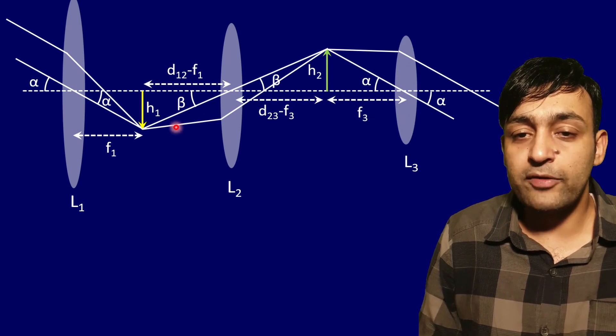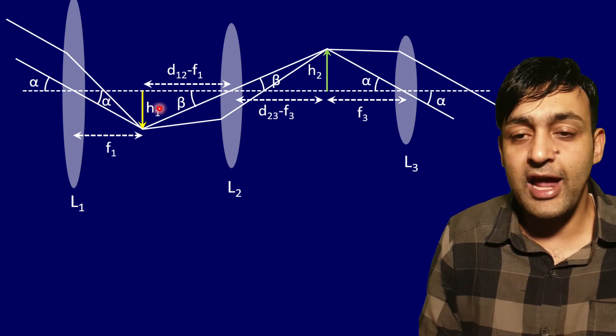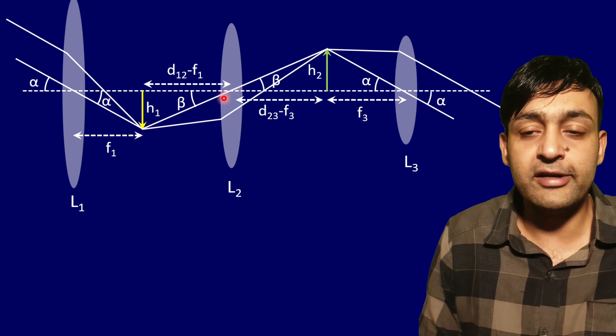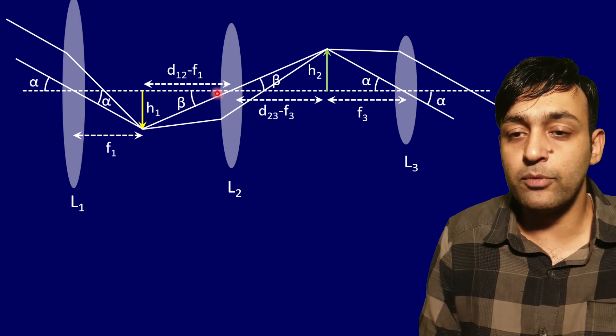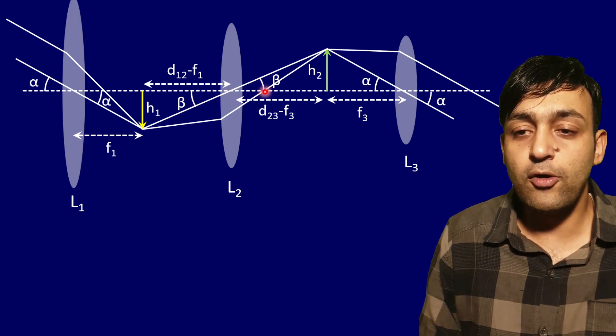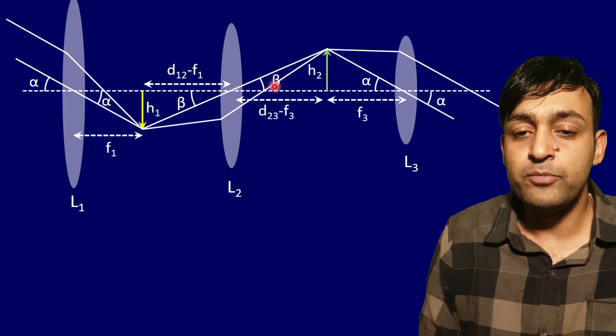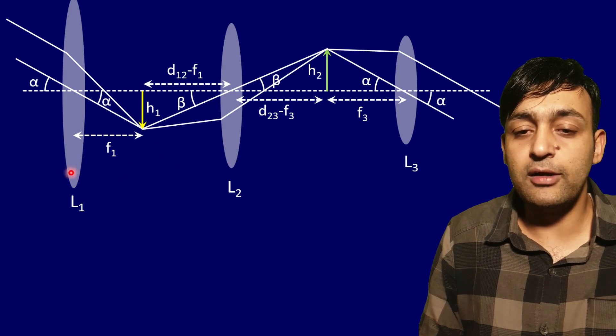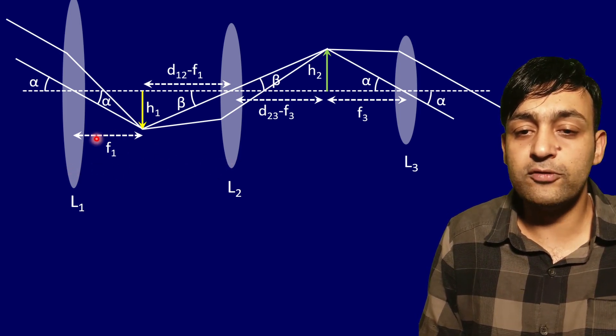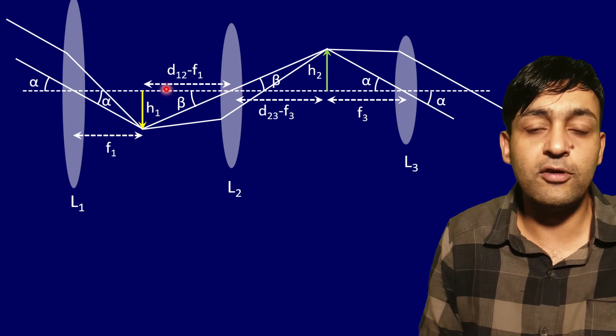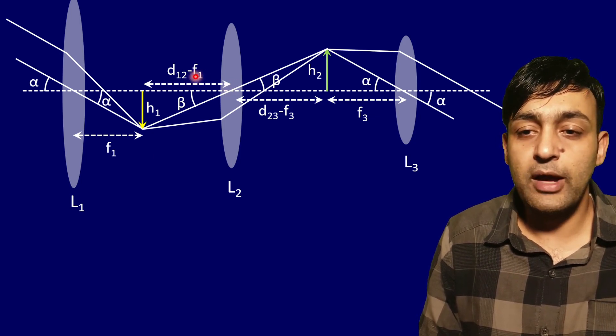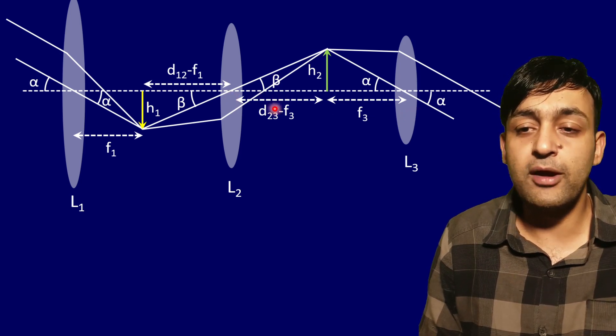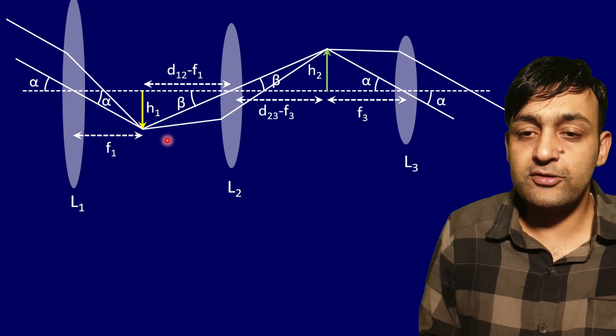This angle was already alpha. Let's assume that this ray passing through the optical center, the undeviated ray, is making angle beta with the principal axis. Of course on the other side it is also making angle beta. The distance between L1 and L2 is d12, so this distance is f1, therefore this distance becomes d12 minus f1. Similarly, this distance will become d23 minus f3.